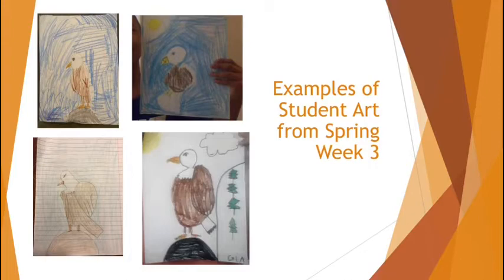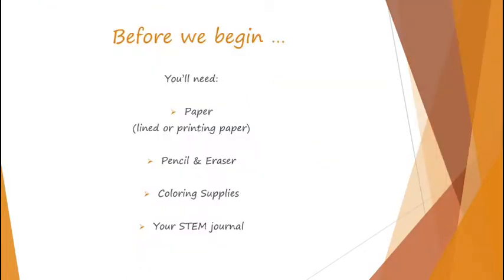So these are some of our good eagle examples. Thank you, friends. Alright, before we begin, you're going to need paper like your sketchbook, pencil and eraser, coloring supplies, and your STEM journal. That is new. We're going to start making some art notes in our STEM journals.